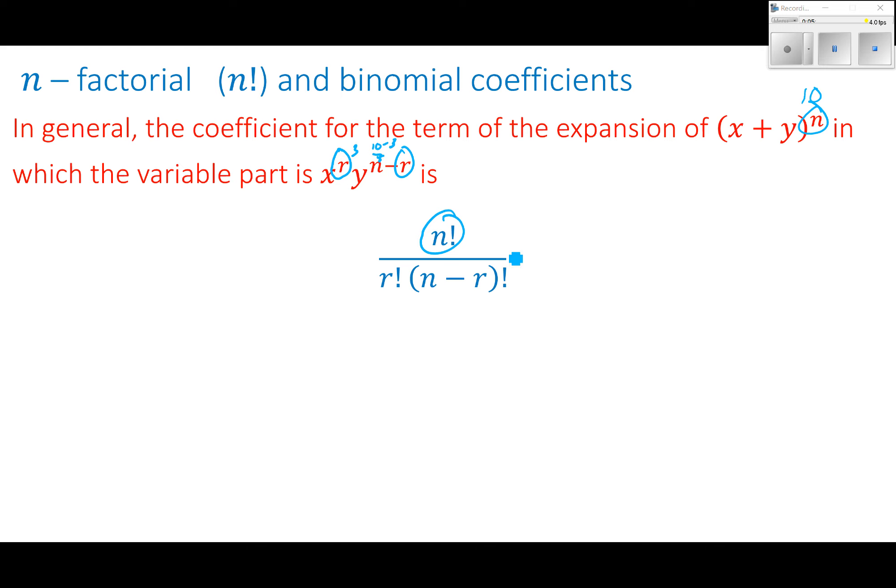And be very careful here. This factorial is on the outside of the parentheses. So we have to take n minus r and then do our factorial. So when I was using my 10 up here, for example, this would have been 10 factorial all over 3 factorial times n minus r, which we found was 7 factorial.